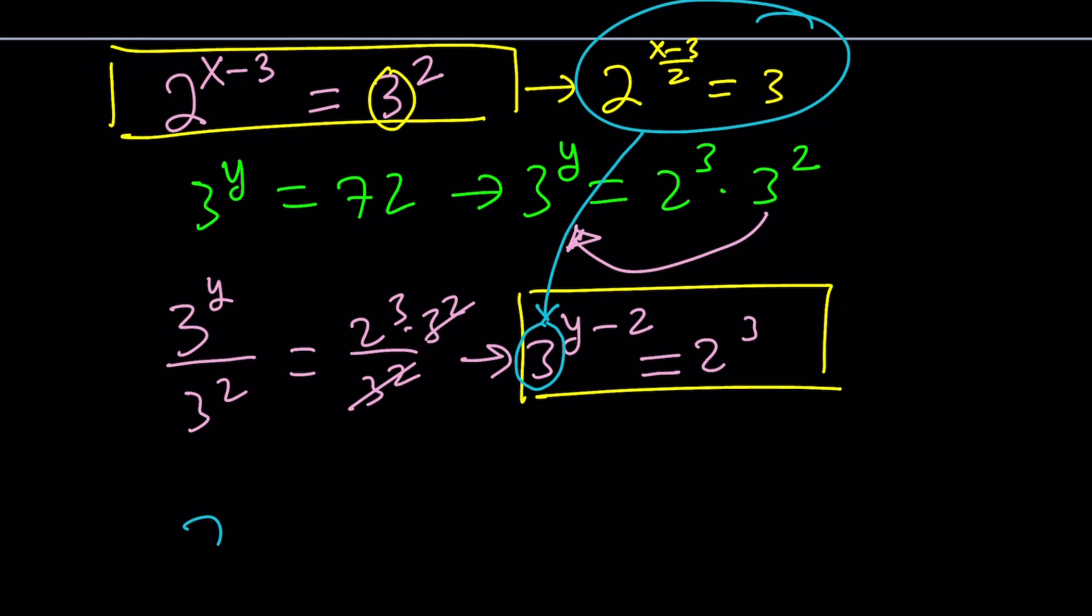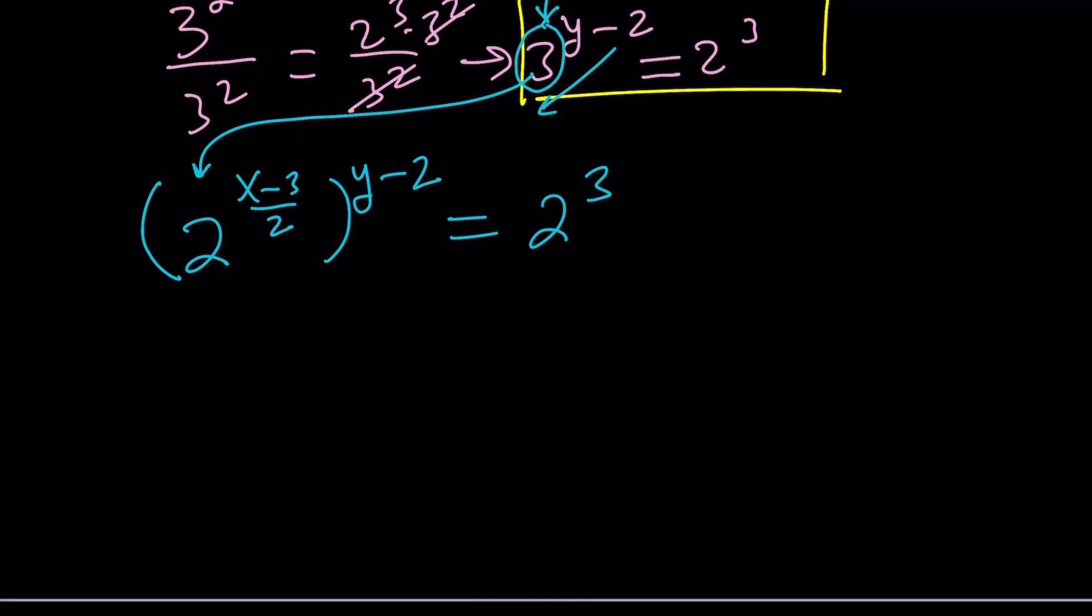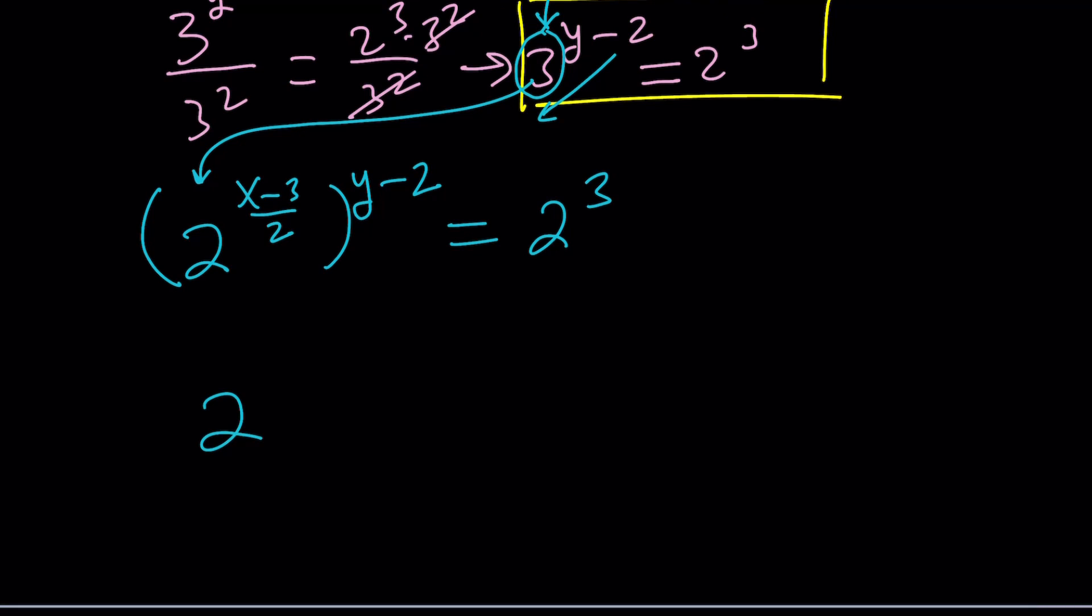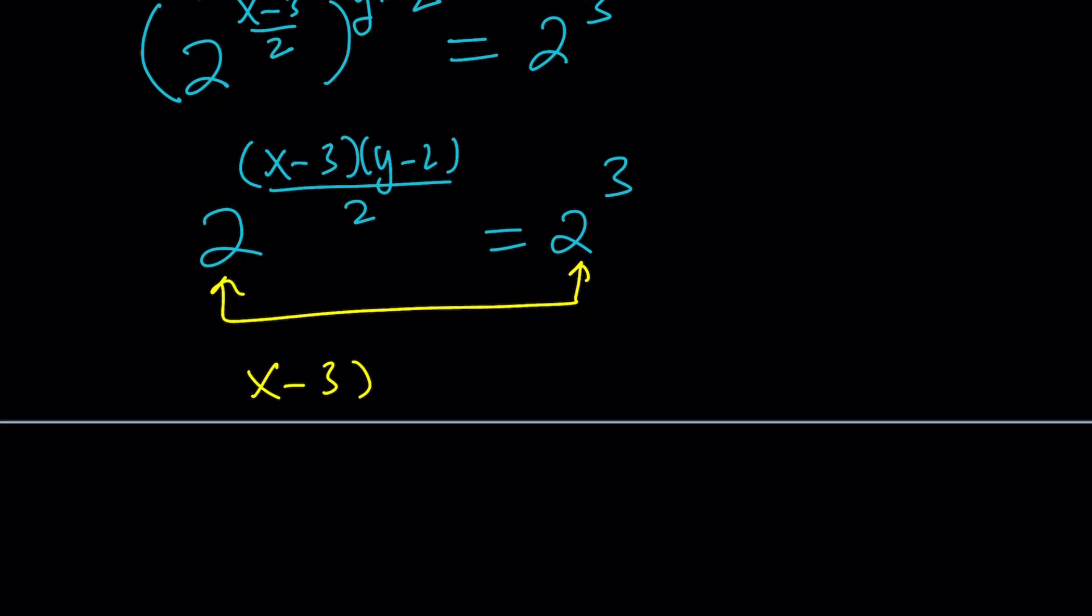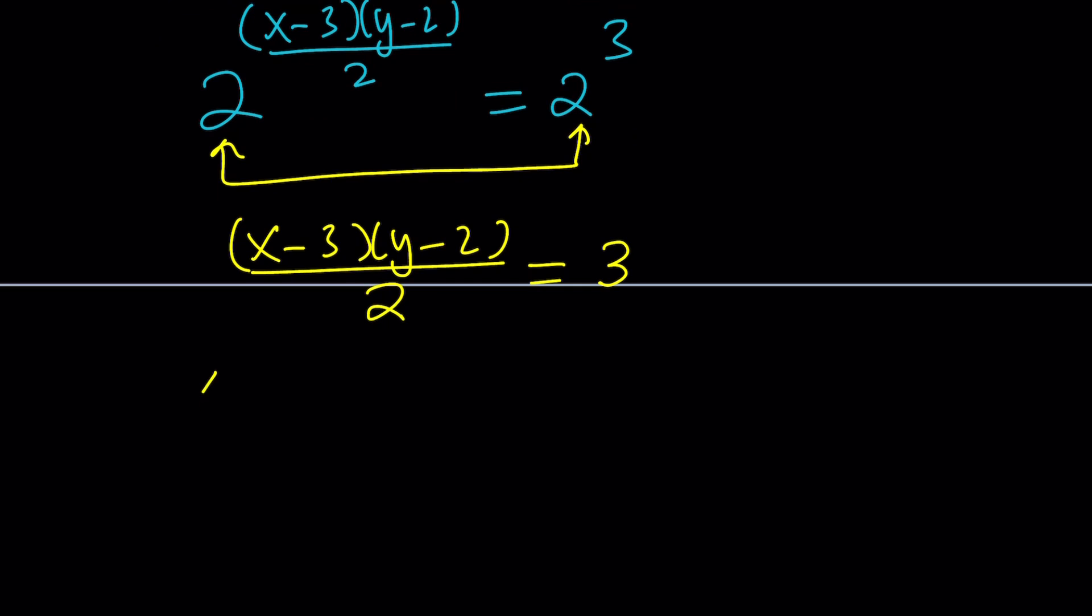Replace 3 with 2 to the power x minus 3 over 2. And then raise it to the power y minus 2. And that equals 2 to the third. That kind of looks complicated at first, but then once you know what you're supposed to do, the rest is actually easy. Now, we're going to multiply the exponents. So this is going to become 2 to the power x minus 3 times y minus 2 divided by 2 equals 2 to the power 3. Now, we have the same base. So we can go ahead and set the exponents equal. That gives us x minus 3 times y minus 2 over 2 equals 3. And cross multiplication gives us x minus 3 times y minus 2 equals 6.